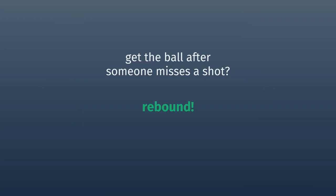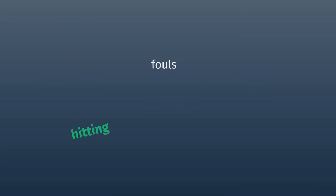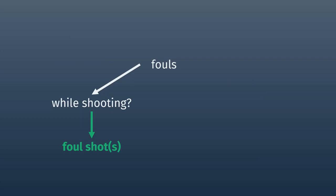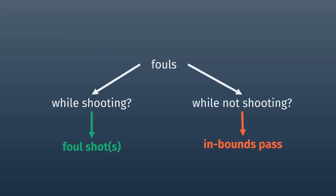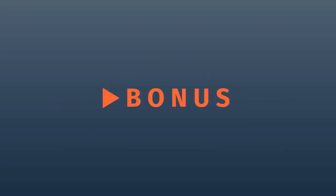The exact rules about what is a foul and what isn't change from league to league, but typically you can't shove someone, hit them, or trip them. If one of these violations occurs, the referees will call a foul. If the player was shooting when the foul occurred, they'll get to shoot free throws. If they weren't shooting, their team gets to pass the ball inbounds and continue playing. If one team fouls the other a certain number of times — in college it's seven — the team getting fouled will get to shoot free throws even if they weren't shooting. This is called being in the bonus.